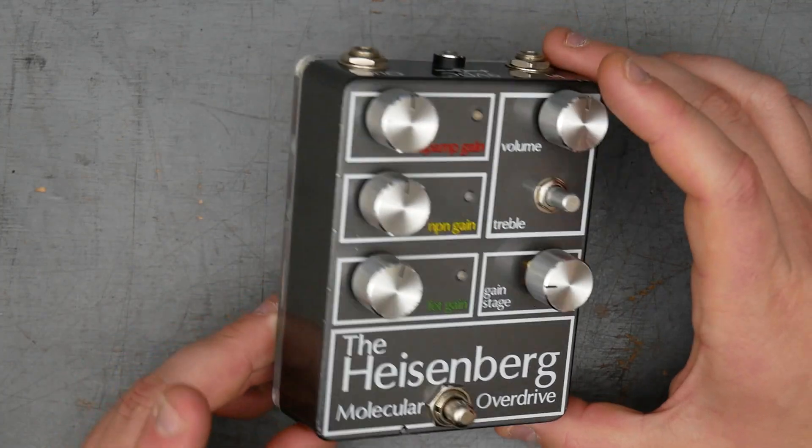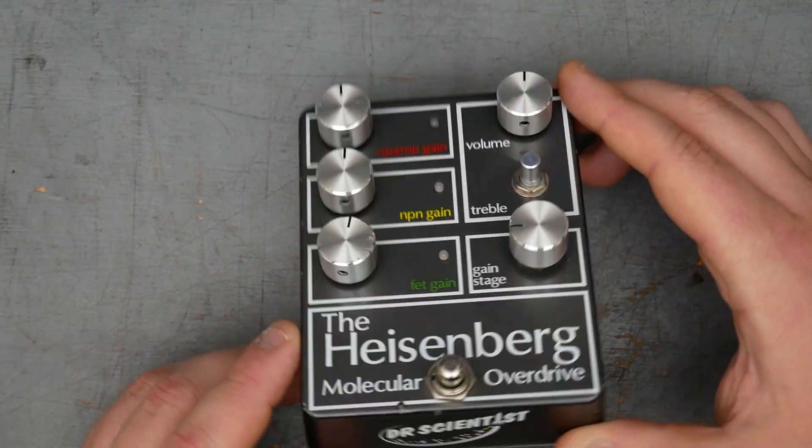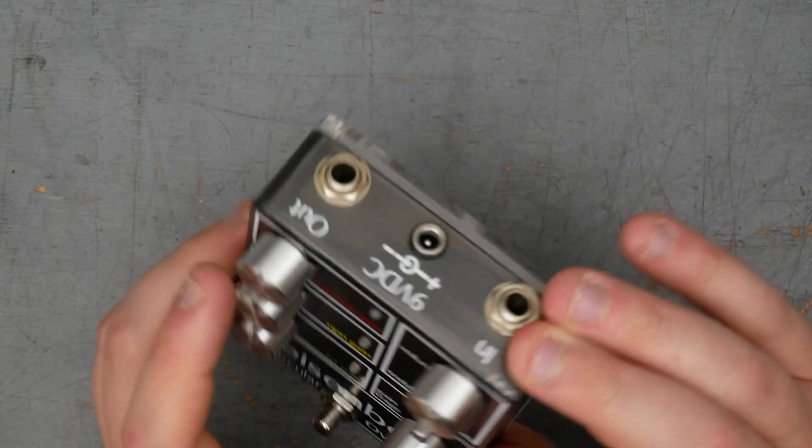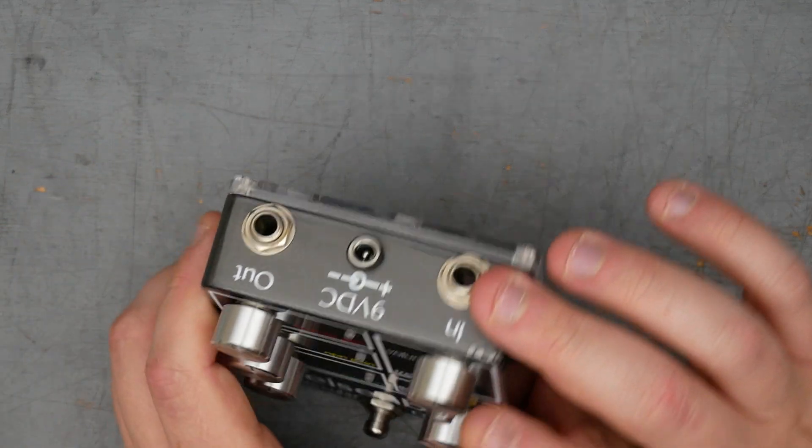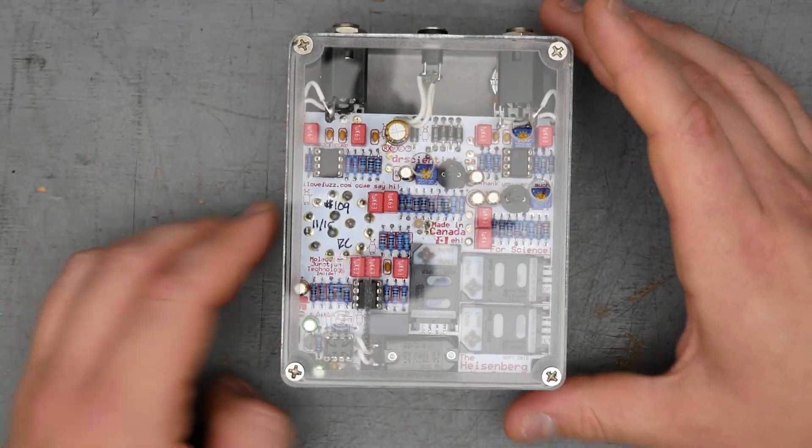Enclosure here is a 1590 BB size, appears to be like a dark gray powder coat, got the Dr. Scientist logo on the bottom, input and output jacks on top with the nine volt DC jack. It's the non-switching type, no nine volt battery inside.